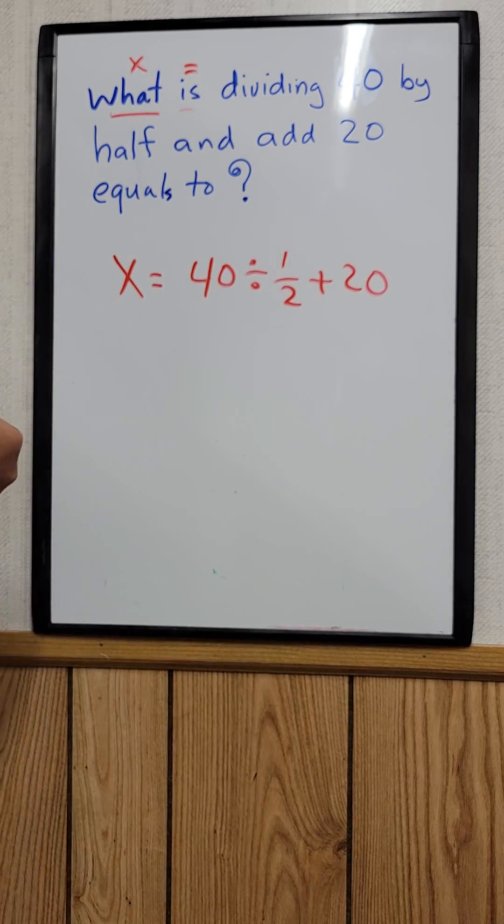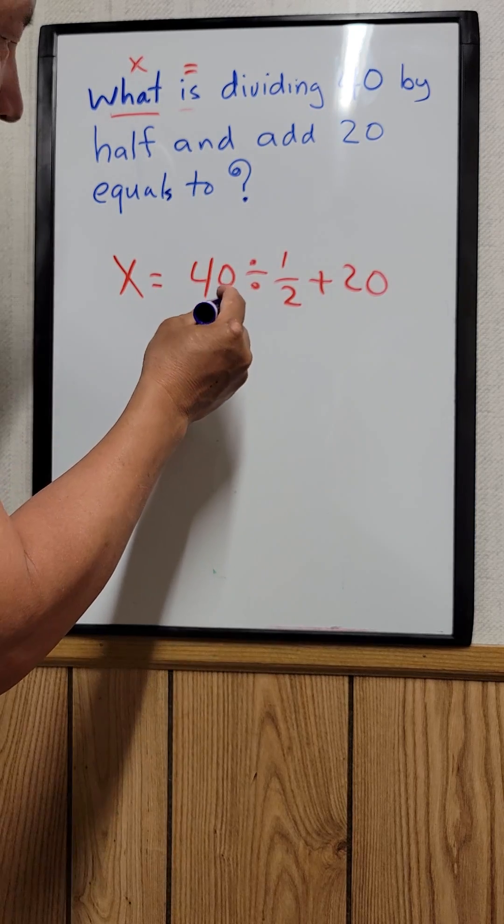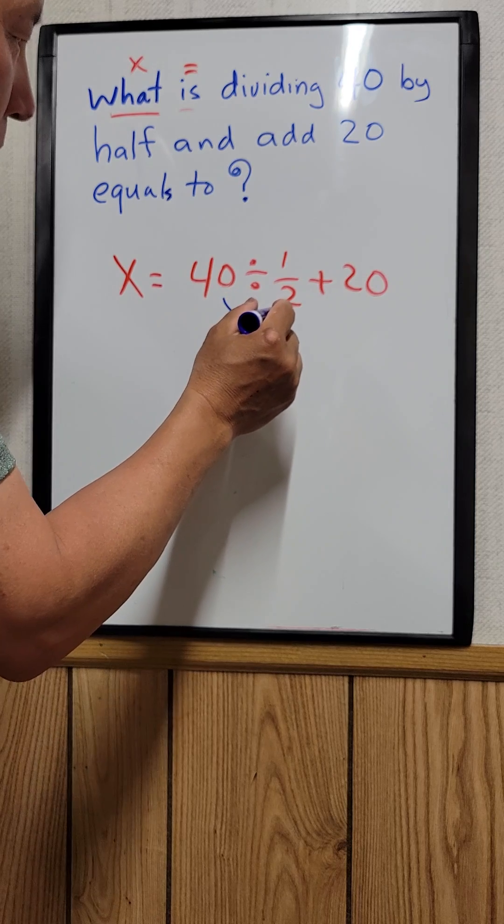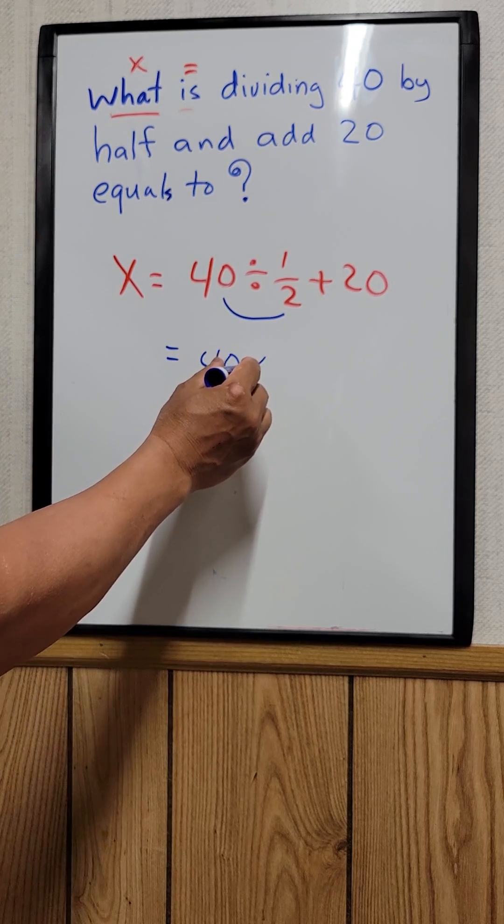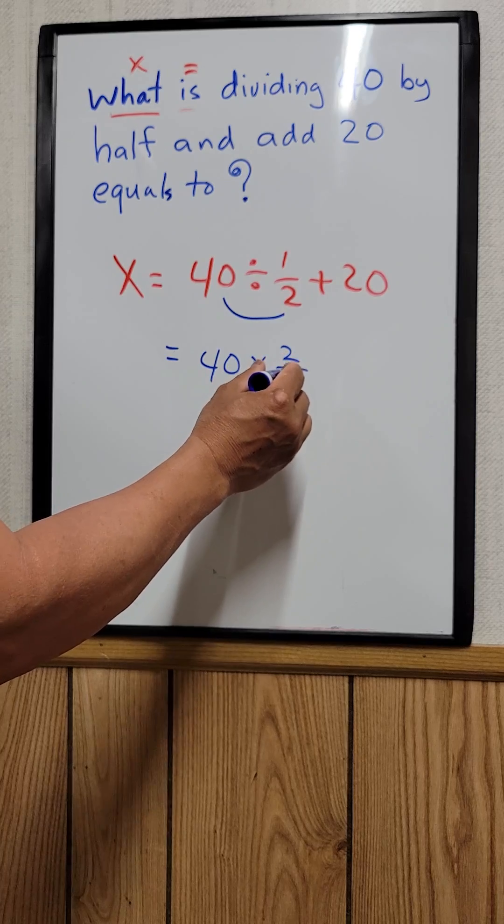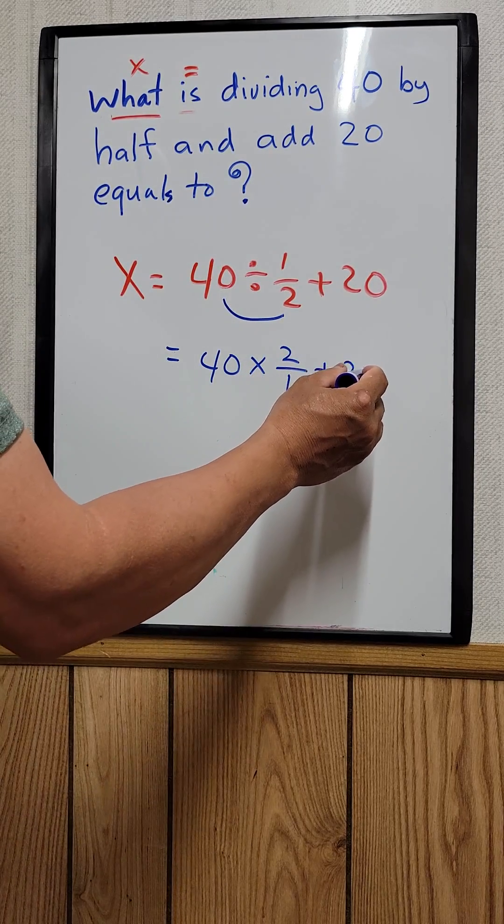Okay? And then we can work with this one first right here: 40 divided by half. It's the same thing as saying 40 times 2 over 1, and then plus 20.